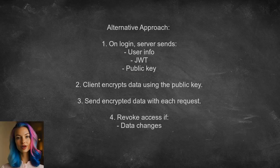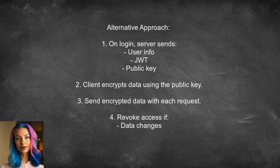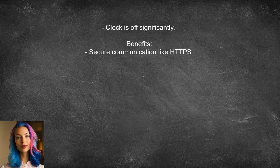Another alternative approach suggests enhancing security by using asymmetric encryption. When a user logs in, the server sends a public key along with the JWT and user information. The client then encrypts any sensitive data using this public key before sending it back to the server with each request. If any data changes or if there's a significant clock discrepancy, the server can revoke access. This method aims for secure communication, similar to what HTTPS provides.